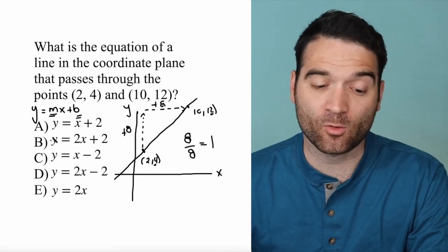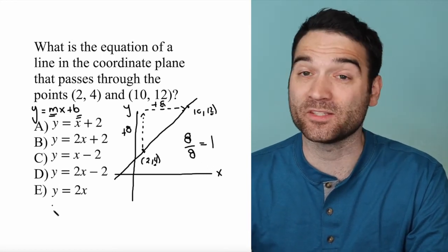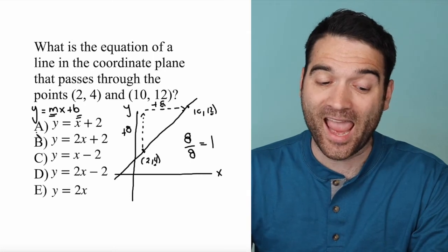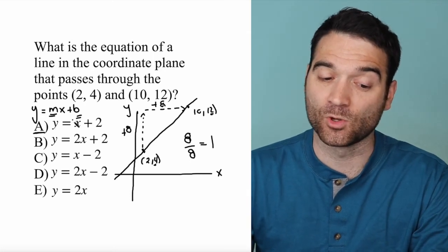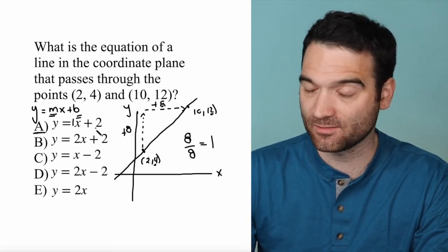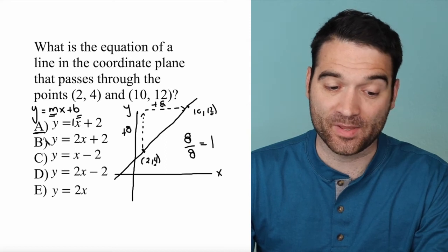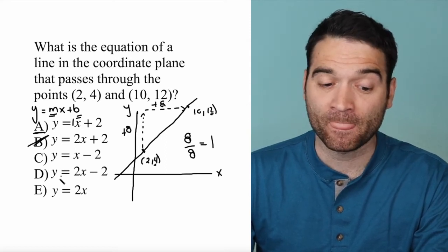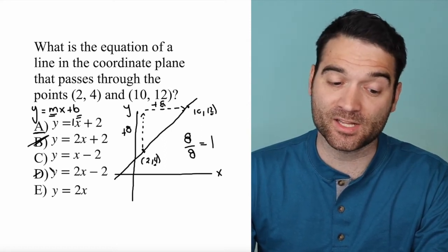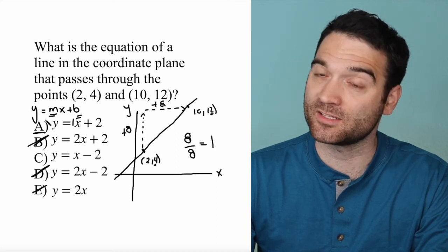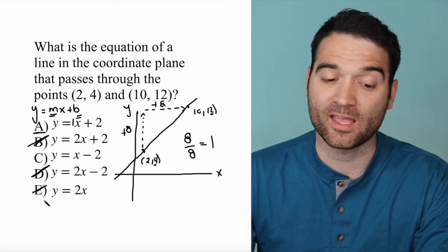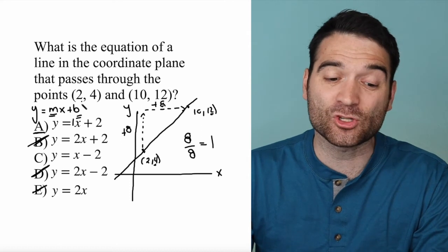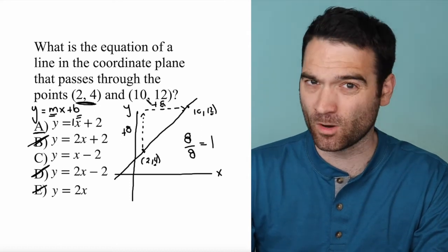Which of these equations have a slope of 1? Well, A has a slope of 1: y = 1x + 2. B does not, so that's out. C does, so we'll keep it in. D does not, and neither does E. So we're down to A and C at 50-50. The very easy way to solve this is to just plug in the points and see if they work.